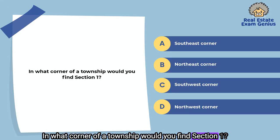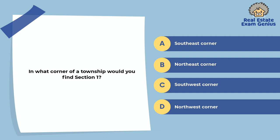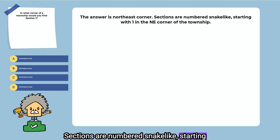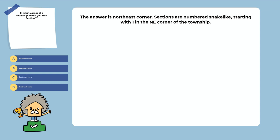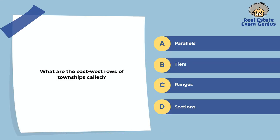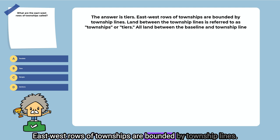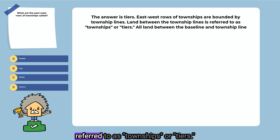In what corner of a township would you find section 1? Southeast corner, northeast corner, southwest corner, or northwest corner. The answer is the northeast corner. Sections are numbered snake-like, starting with one in the northeast corner of the township. What are the east-west rows of townships called? Parallels, tiers, ranges, or sections. The answer is tiers. East-west rows of townships are bounded by township lines. Land between the township lines is referred to as townships or tiers.